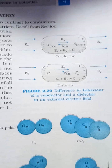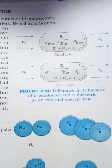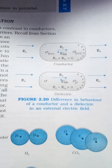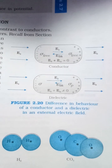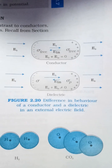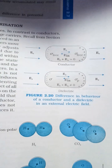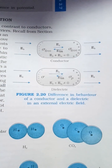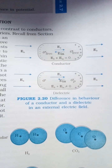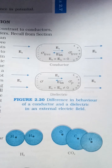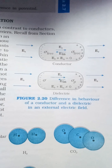Dear physics students, right now I have the difference in behavior of a conductor and dielectric in an external electric field. The figure here will provide nice information regarding what I am asking. When you study electrostatic potential and capacitance at the plus two level, you will get figure 2.20, showing the different behavior of a conductor and a dielectric in an electric field.